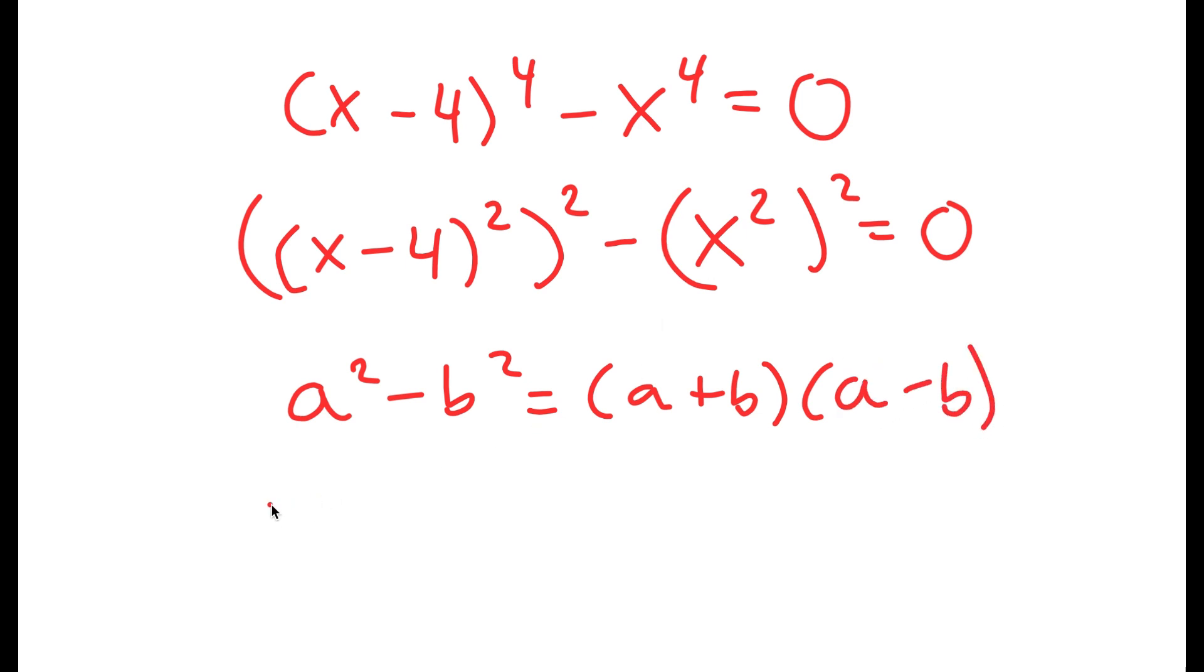So in this case, it's going to turn into x minus 4 squared minus x squared times x minus 4 squared plus x squared is equal to 0.